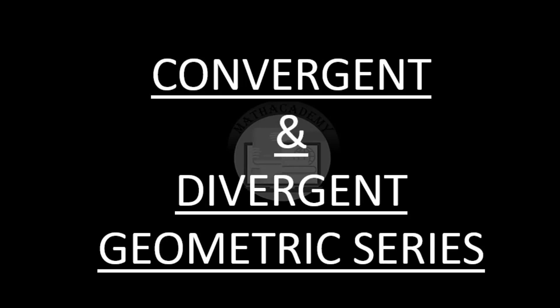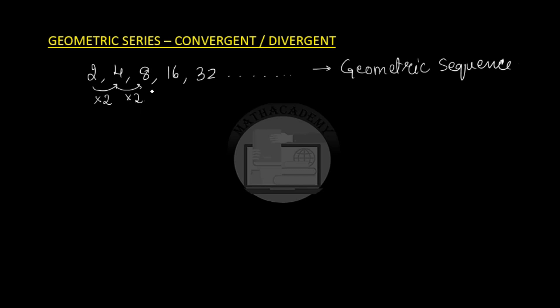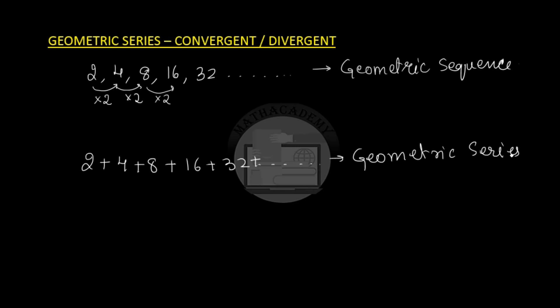In this video we will see what are convergent and divergent geometric series. Let's take a geometric sequence: 2, 4, 8, 16, 32, and so on. Whenever we write the terms comma-separated we call it a sequence, and this is a geometric sequence with common ratio 2. If we represent it by the sum of all the terms, such a sequence is called a geometric series. We will see when a geometric series is called convergent and when it is called divergent.